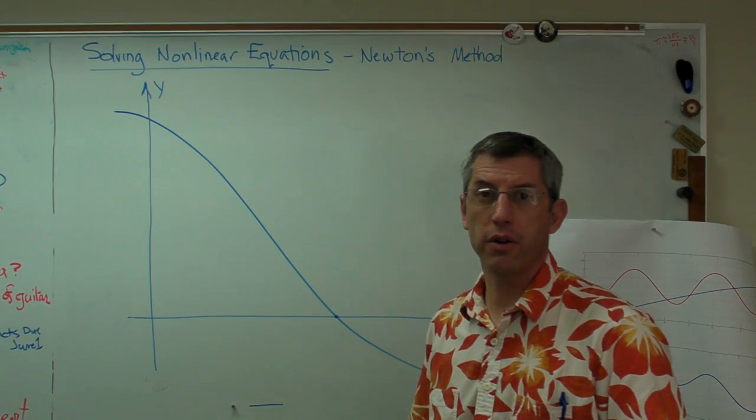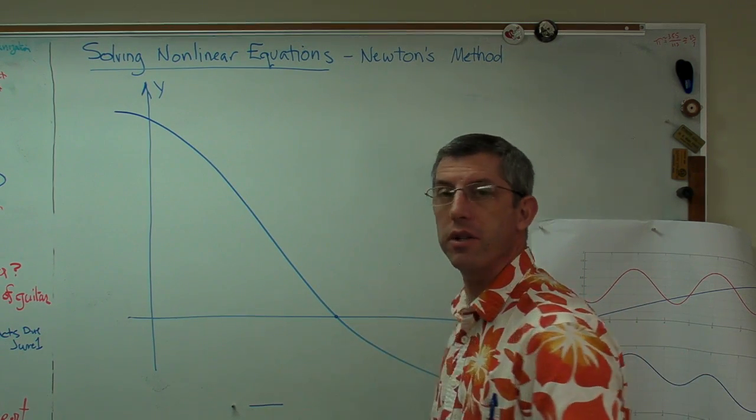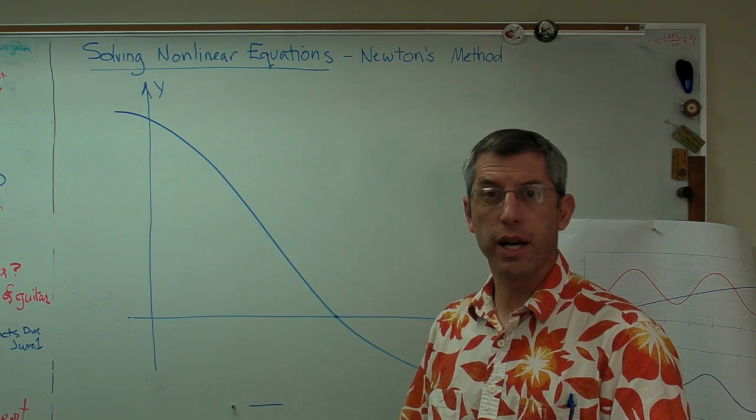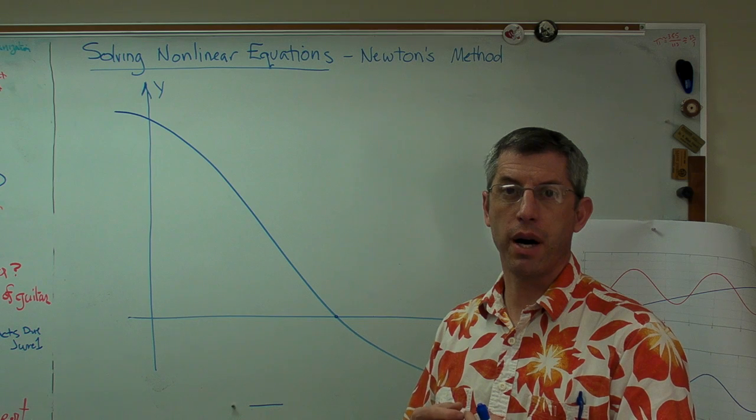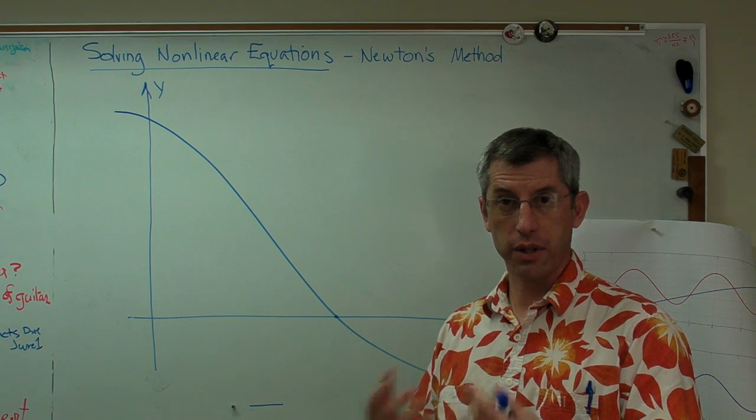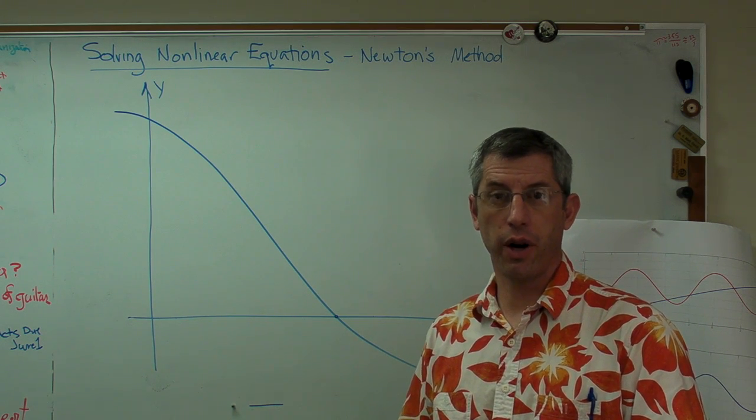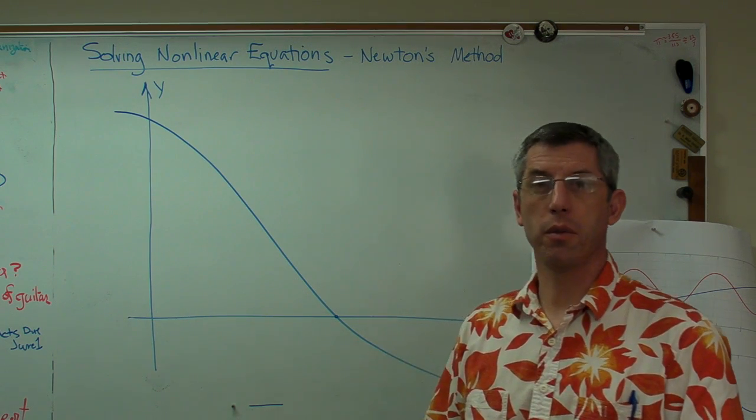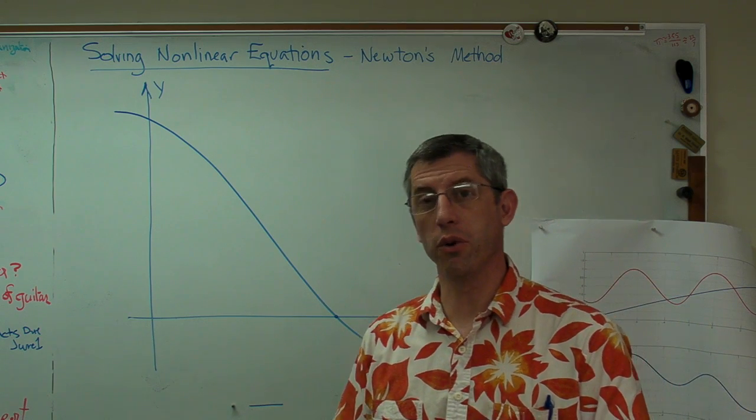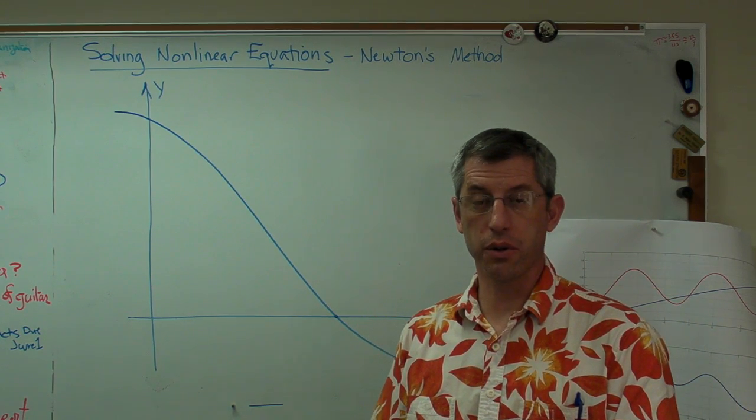Now, why would we be trying to find this? There's all kinds of good physical reasons. In dynamics class, you'll learn that if you have a body traveling in ballistic flight and there's no aerodynamic drag, the shape of its path is a parabola. If you want to know where it hits the ground, you have to find the root of the parabola, where y equals zero.